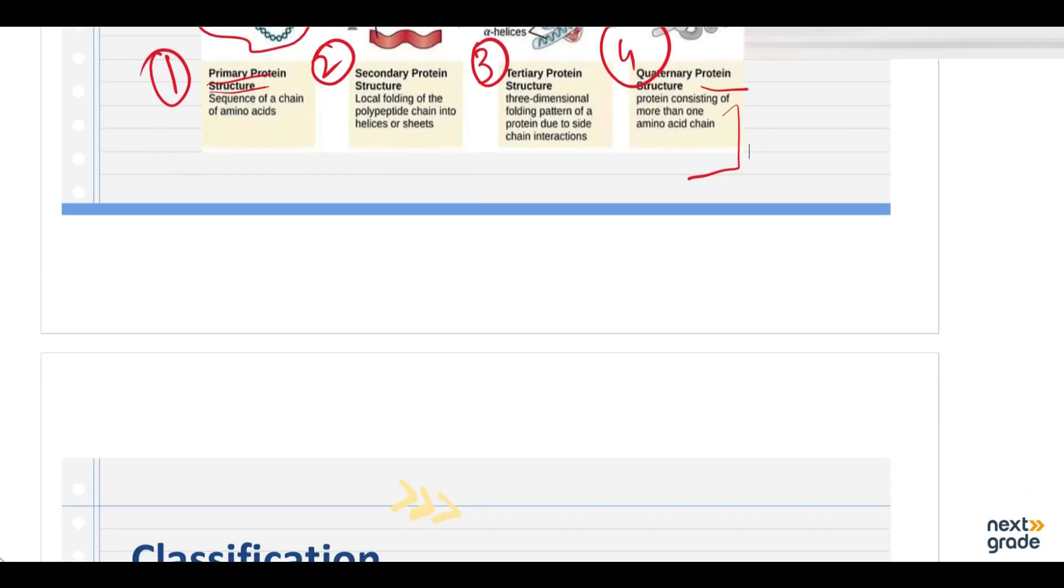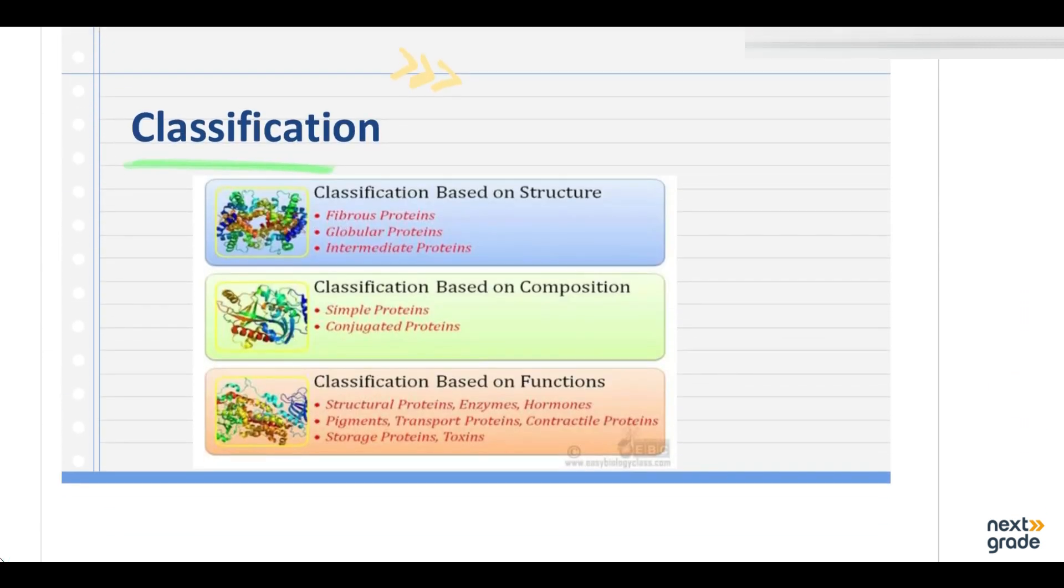After that, is there any classification of protein as well? Yes, there is. Now, classification depends on three things. One is classification based on structure which we will study. One is classification based on composition and classification that is based on the function. In the structure, protein has three classification: fibrous protein, globular protein, and intermediate protein. In the composition, it is a simple protein and a conjugated protein.